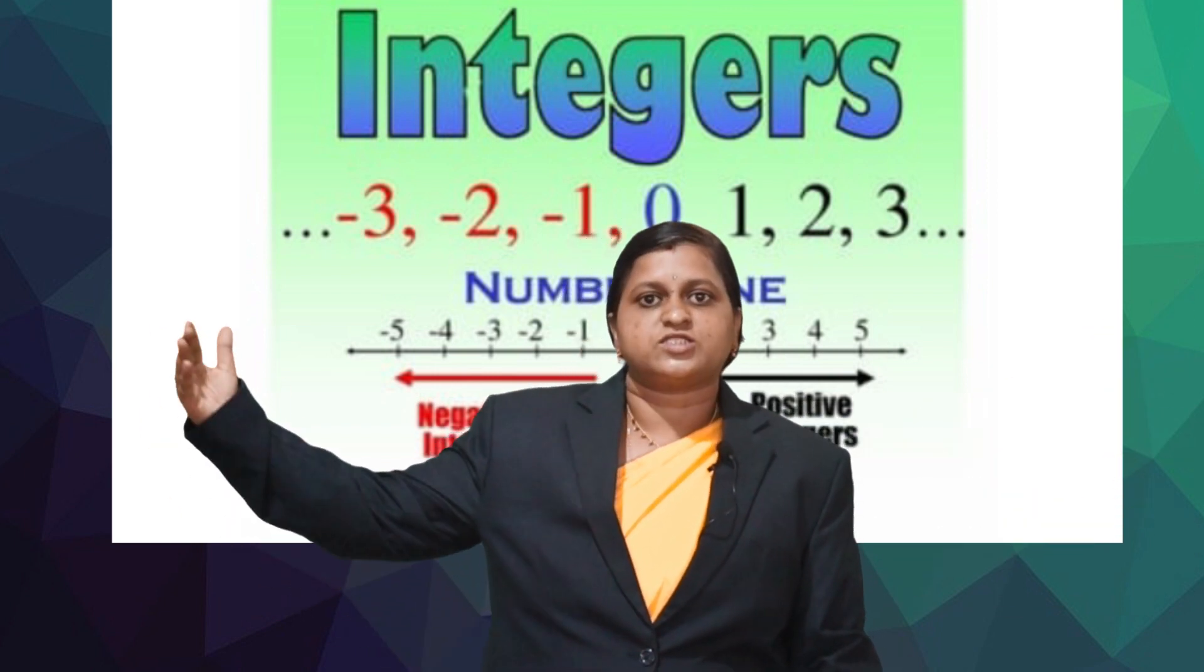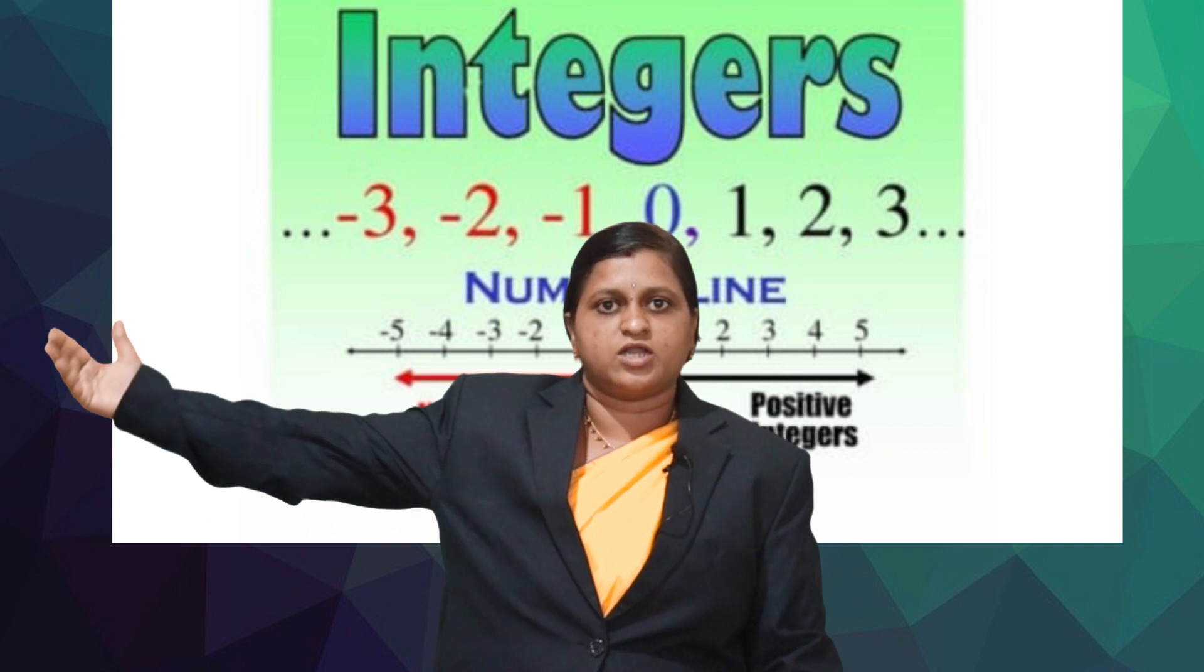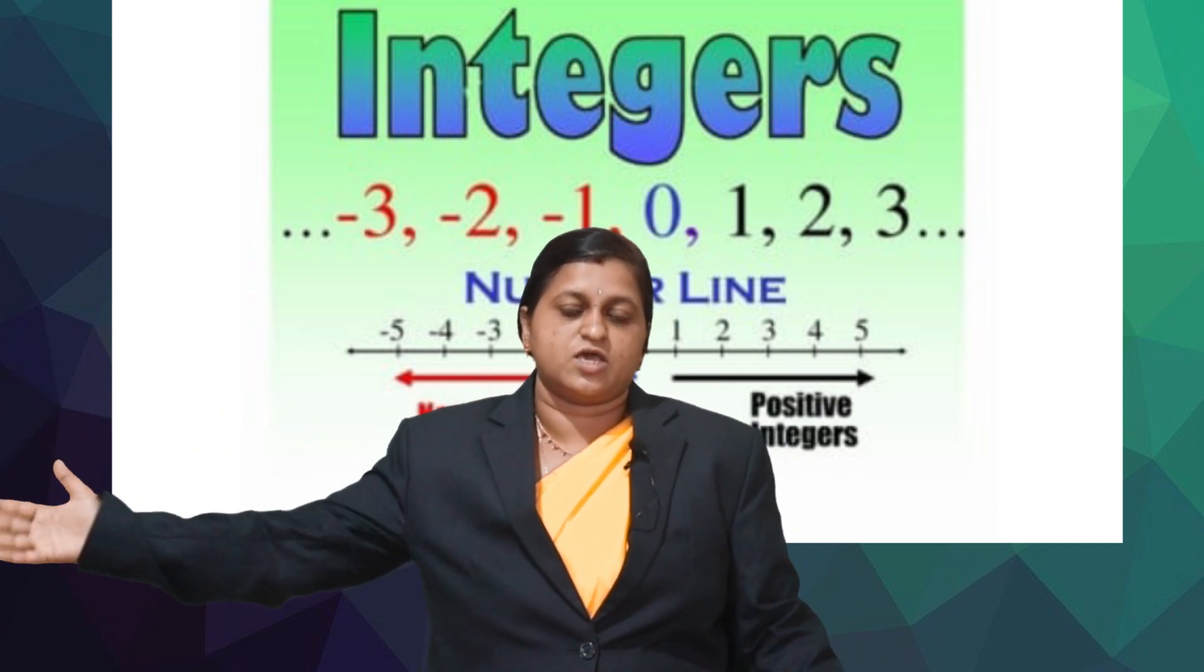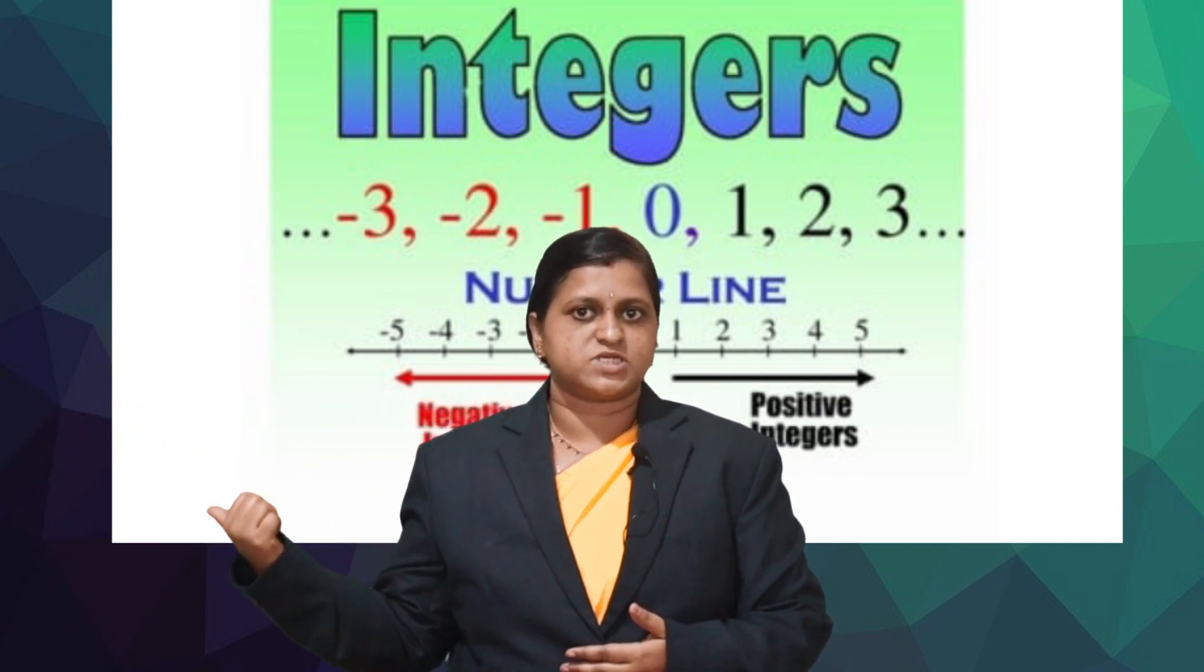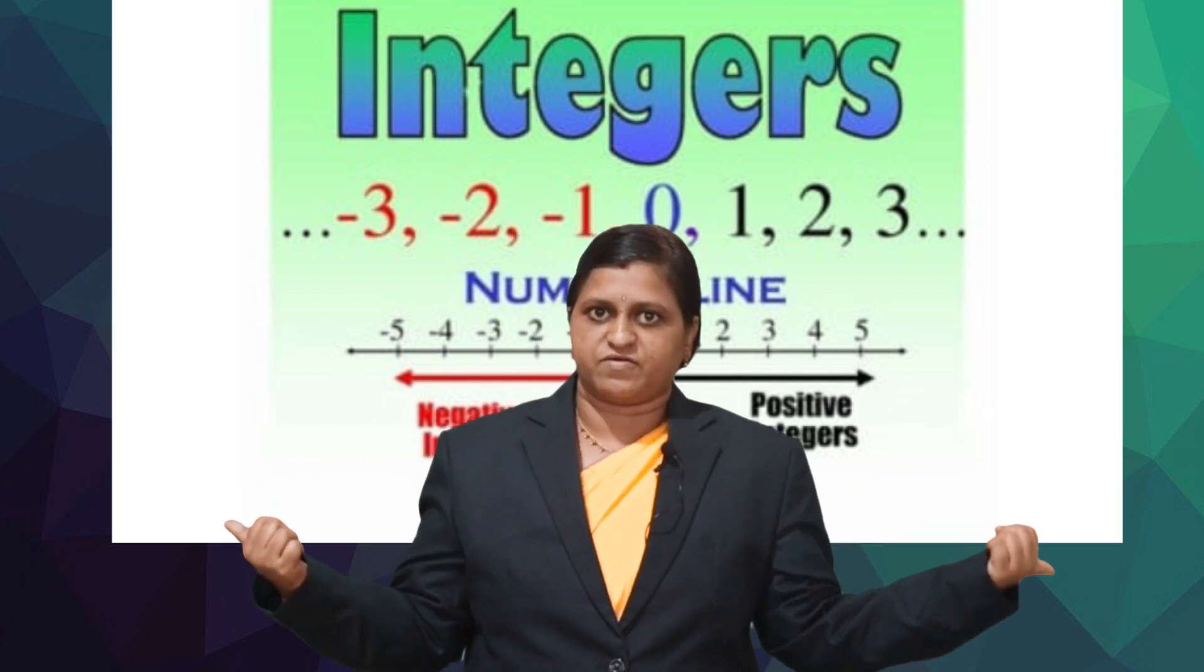One, two, three, four and so on are positive integers. Zero is neither a positive integer nor a negative integer.